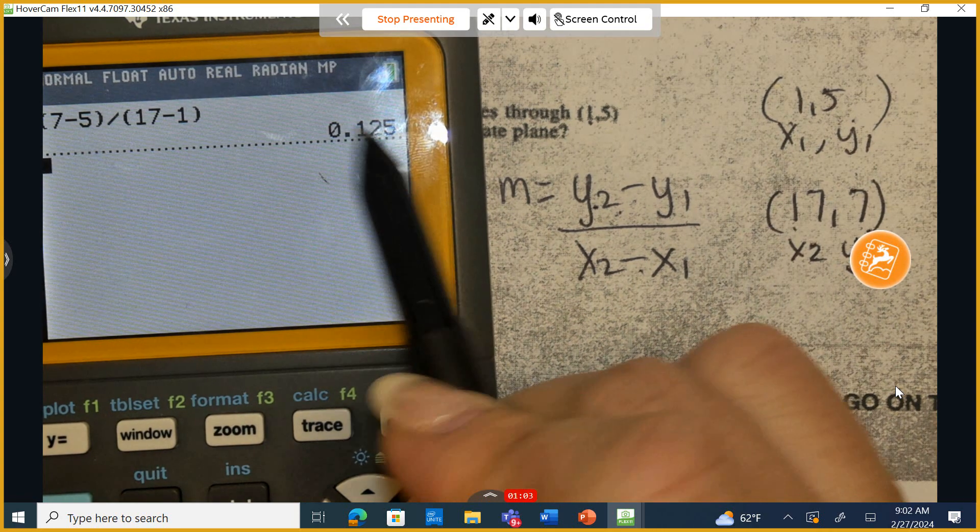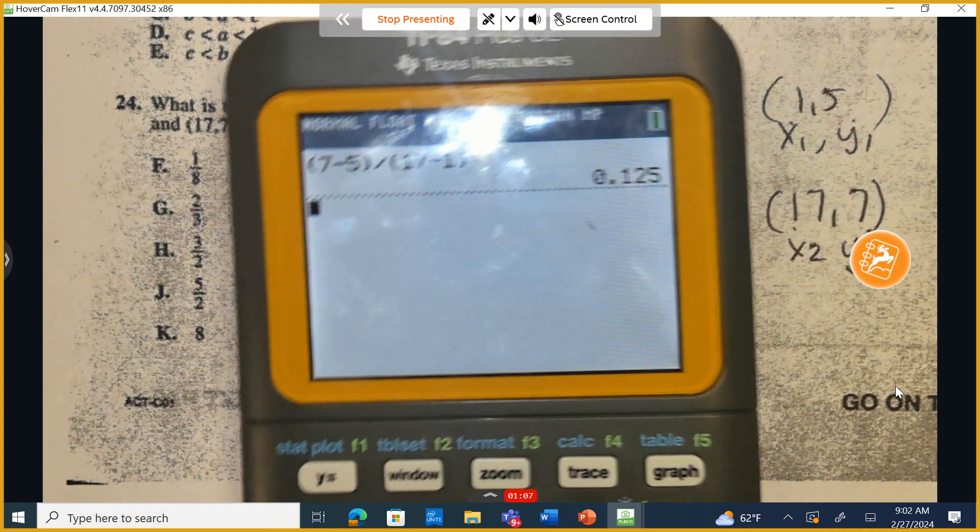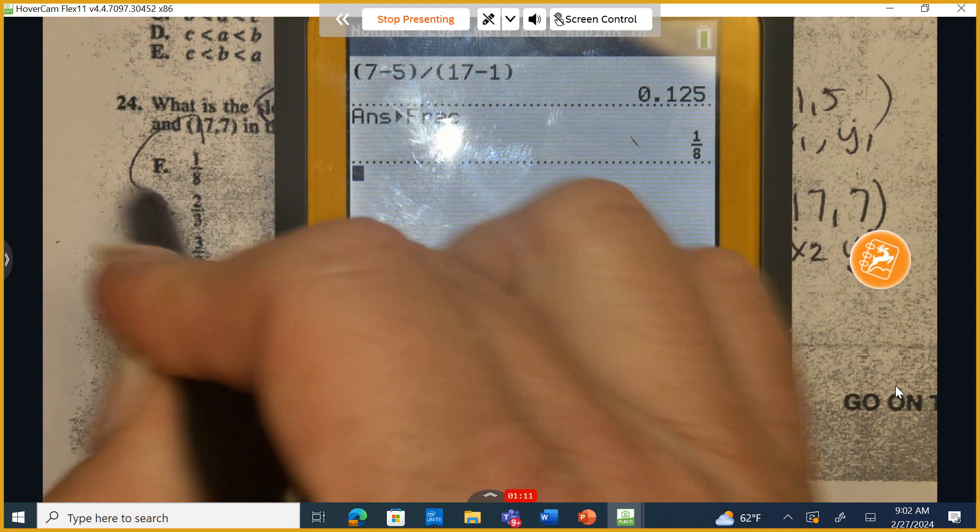Okay, this answer doesn't mean it's wrong, but it doesn't look like any of the provided multiple choice options. So let's hit math, fraction, enter, enter. We get 1 eighth. The correct answer is F.